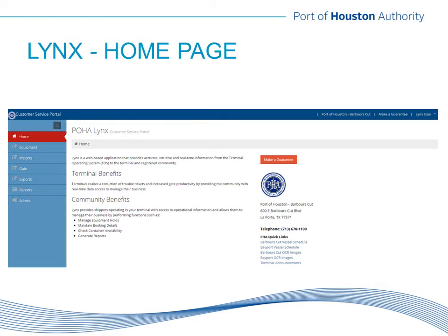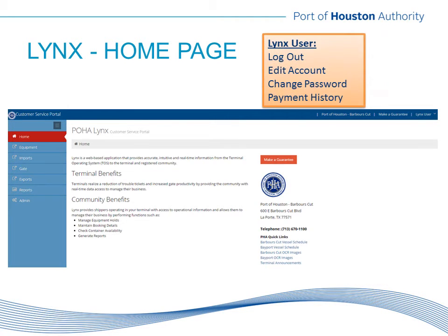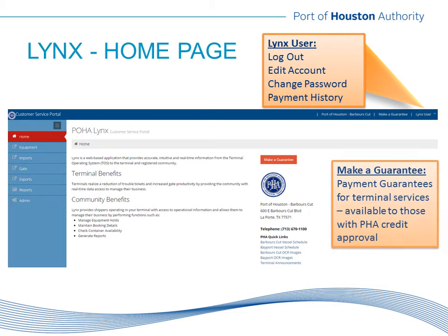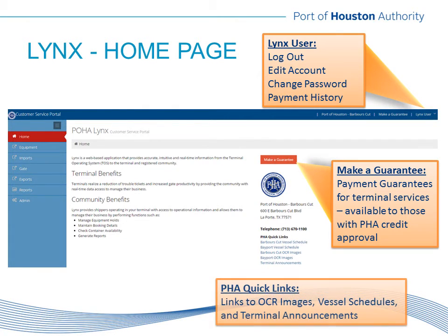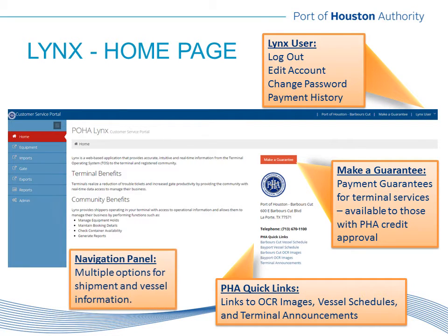You are now a Links user. The homepage contains the main menu items, and we have also added valuable links to help provide additional information. Moving clockwise around the page, you will see everything that is available. By choosing Links User on the far right, you can change your account details, password, and view payment history for your user ID. Users with access to guarantee payments will have a red Make a Guarantee button that links to the payment page. PHA quick links are on the bottom right of the screen — these are direct links to the PHA vessel schedules, damage inspection images, and daily terminal announcements. Terminal announcements will include daily chassis instructions, holiday gate schedules, important terminal updates, and even emergency announcements as necessary. Along the left side of the page, you have the navigation panel with different query options. This is the section of the page where you will choose the category for your query.